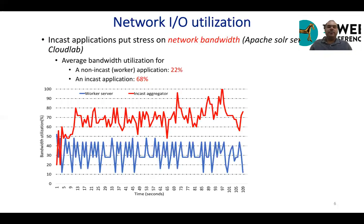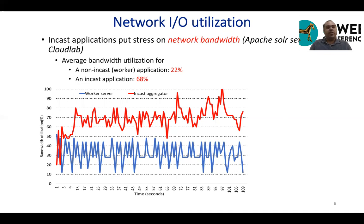Let's take a look at the real experiment. We implemented Apache Solr, an open source text indexing server, in a CloudLab environment and simulated a real data center. We measured the network bandwidth utilization of Apache Solr, which plays the role of in-cast aggregator. The network bandwidth utilization for that server is 68%, while for a non-in-cast worker server that does not collect replies it is only 22%. This experiment confirms that in-cast aggregators are indeed network bound.